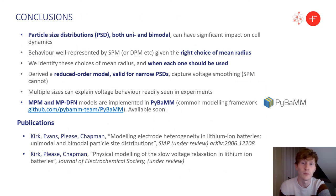In conclusion, we have shown that particle-sized distributions, both uni and bimodal, can have a significant impact on cell dynamics. Their behaviour can be well represented by a single-particle model or double, with the right choice of radius, which we identify. We derive the correction to capture the effects that the SPM alone cannot. And introducing multiple sizes can explain voltage behaviour readily seen in experiments. The many-particle and many-particle DFN models have been implemented in PyBaMM, the flexible common modelling framework, and will be available in the near future.